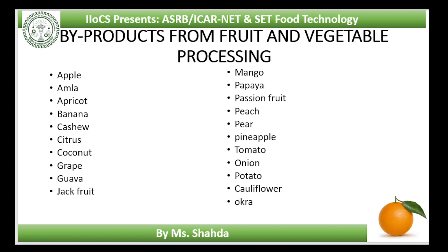Guava is grown all over the country in tropics and subtropics. It is a rich source of vitamin C and pectin. It is used for table purpose and for processing to prepare jelly, nectar, juice, cheese, powder and canned guava. Guava peel, seeds, pulp and core are the main by-products. These can be utilized to prepare cheese separately or collectively, or as animal feed. Cheese prepared from peelings only is brown in colour with satisfactory flavour and good set, while cheese from seed is dark brown, sticky, with soft texture and good flavour.